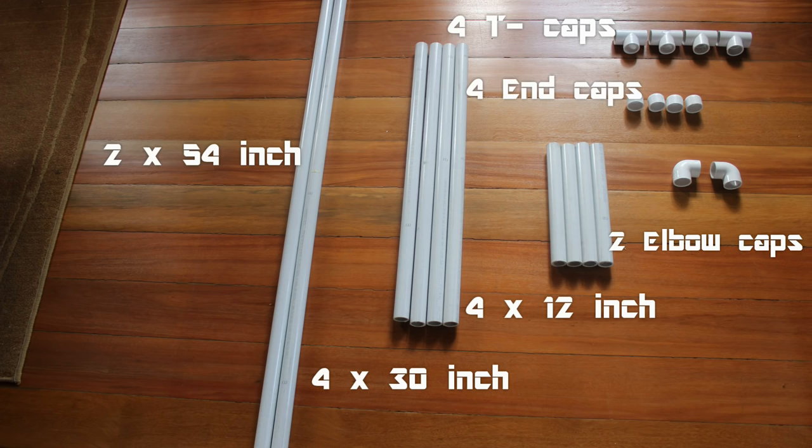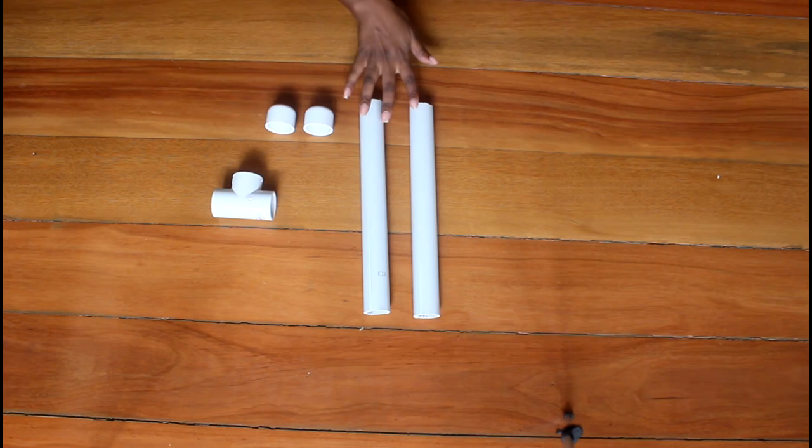Hey, so this is the PVC pipe that you're going to need. I went to my hardware store and got them to cut the pipe exactly how I wanted. The measurements I have are: two 54-inch pieces, four 30-inch pieces, four 12-inch pieces, four T caps, four end caps, and two elbow caps. You want to make sure that the T caps, end caps, and elbow caps all fit the pipe.